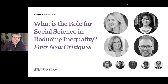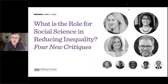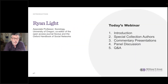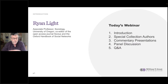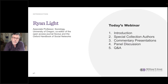Welcome to this webinar, the second on social sciences' role in reducing inequality, hosted by the William T. Grant Foundation. I am Ryan Light, an associate professor of sociology at the University of Oregon. I am here today in my capacity as co-editor of the sociology journal Socius, that recently published two articles and a series of commentaries on the topic of today's webinar.